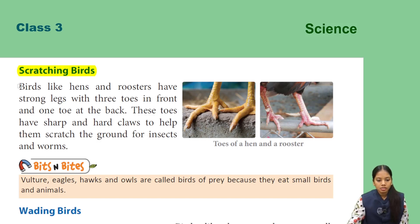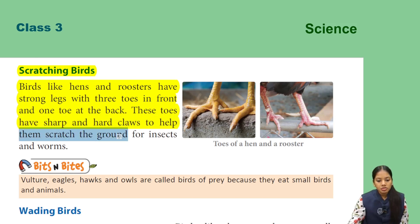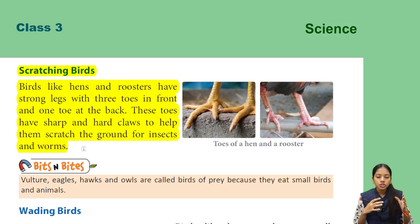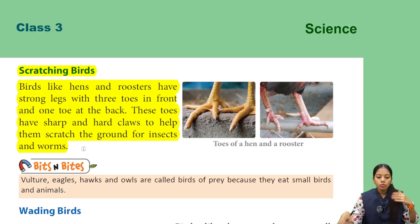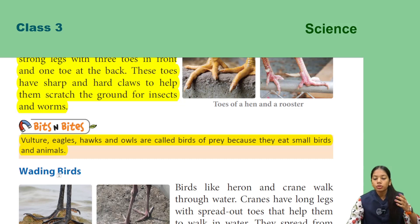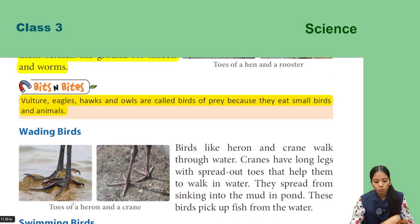Next are scratching birds. Birds like hens and roosters have strong legs with three toes in front and one toe at the back. These toes have sharp and hard claws to help them scratch the ground for insects and worms. Vulture, eagle, hawks, and owls are called birds of prey because they eat small birds and animals.